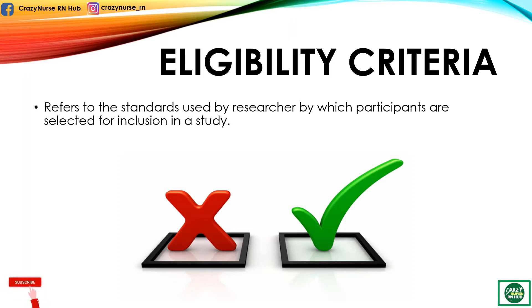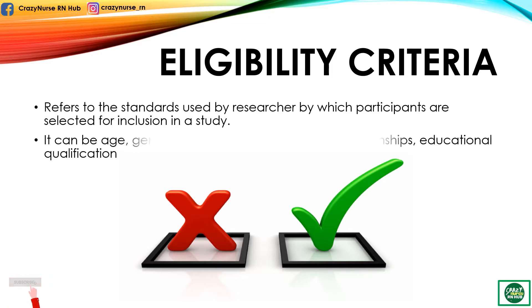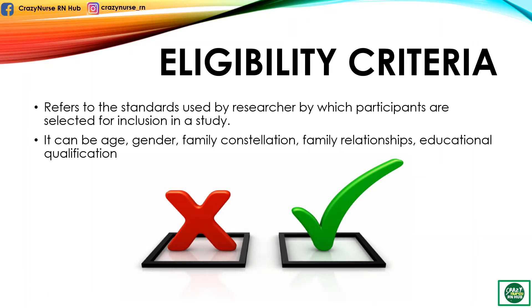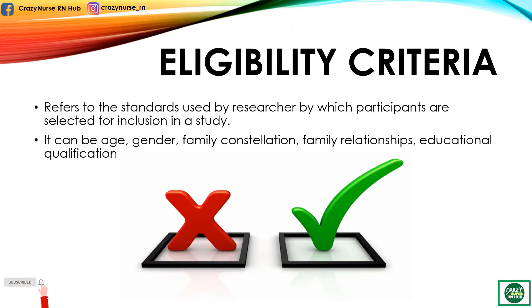It refers to the standards used by the researcher by which participants are selected for inclusion in the study. It can be age, gender, family constellation, family relationships, or educational qualification. The researcher would then specify the characteristics in each criterion measure and select participants based on these characteristics.